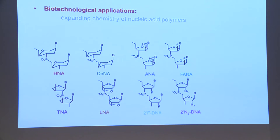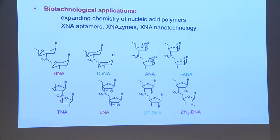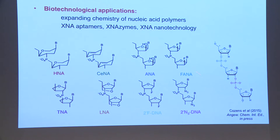There are also opportunities in biotechnology — this clearly expands the chemistry of nucleic acid polymers that can be replicated. We can make aptamers and enzymes and also nanotechnology objects. This shows a family picture of the various XNAs, and we can also, as of recently, increase the molecular diversity further by introducing non-canonical backbone linkages.